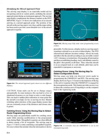Catching errors — using the moving map to detect configuration errors. Moving maps can help you discover errors made in programming the FMS/RNAV. The moving map display removes the depiction of the leg to the active waypoint when the FMS/RNAV is engaged in the non-sequencing mode. This feature provides an easy way to detect the common error of forgetting to set the computer back to the sequencing mode.